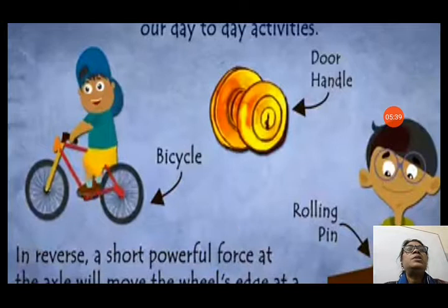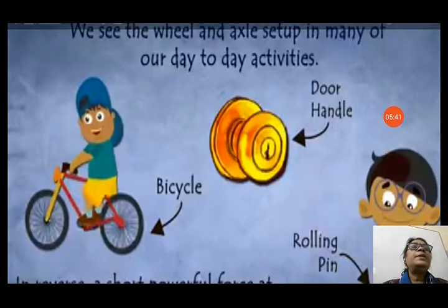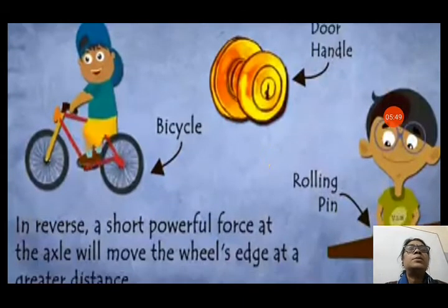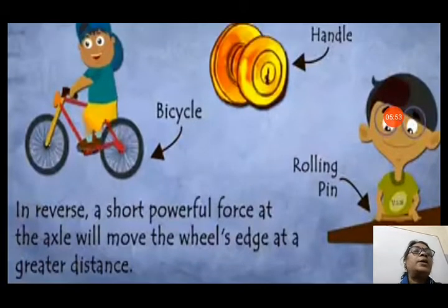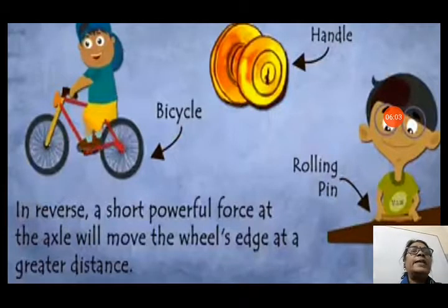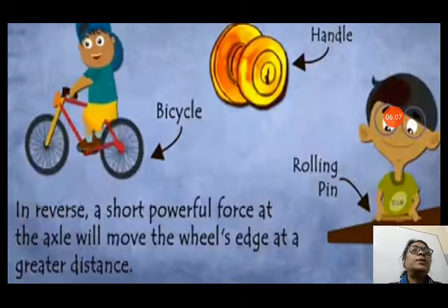We see the wheel and axle setup in many day-to-day activities: the door knob, bicycle, rolling pin — in all of these there is a wheel and axle arrangement. In reverse, a short powerful force at the axle will move the wheel's edge over a greater distance, as seen with the rolling pin.